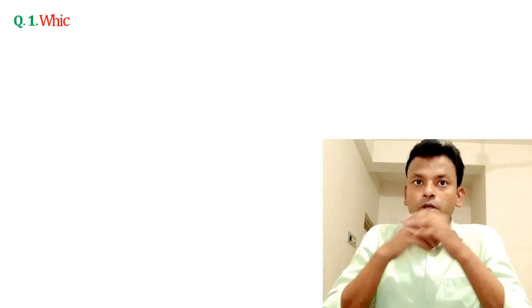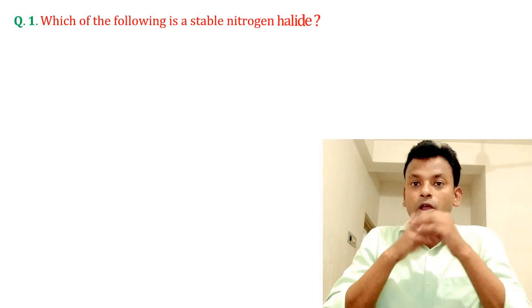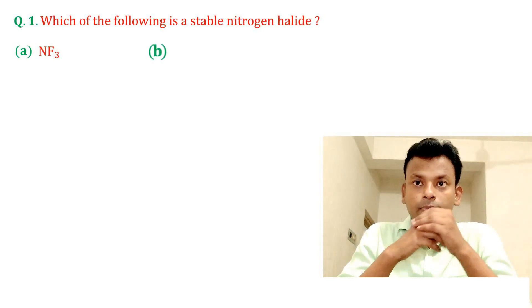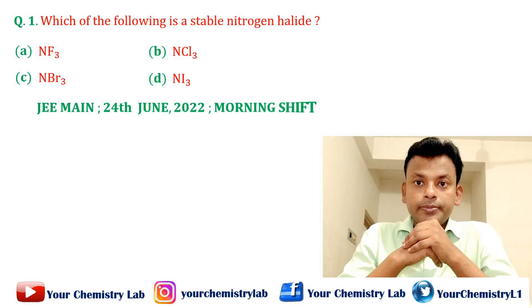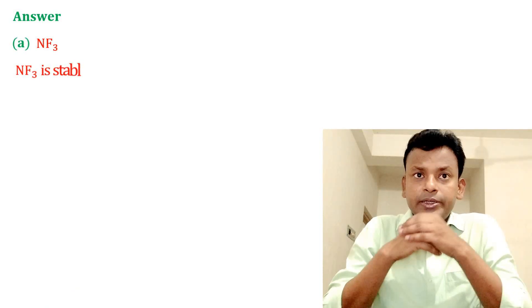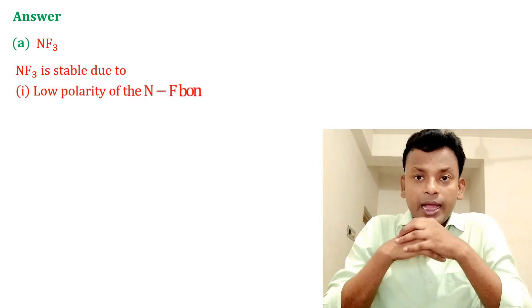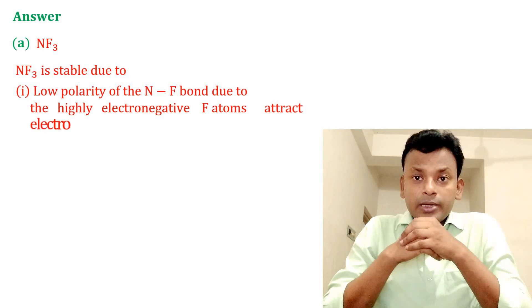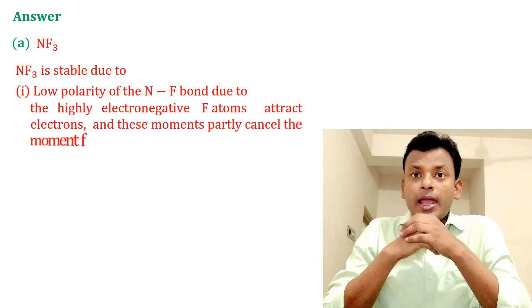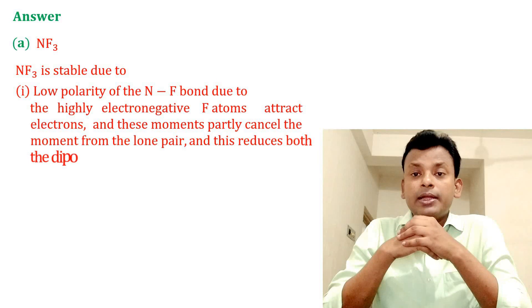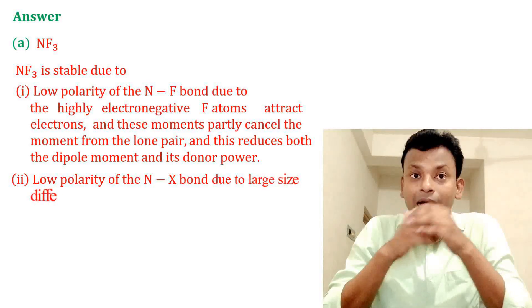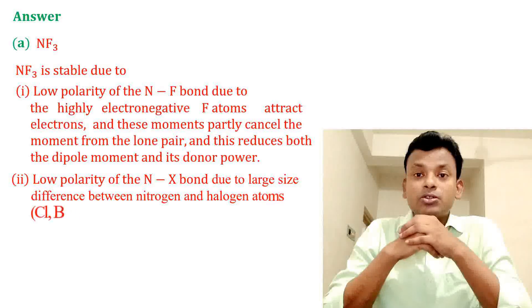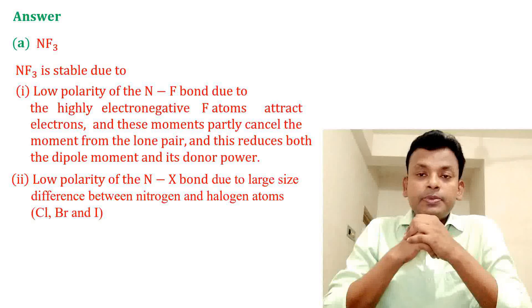Question number one: which of the following is a stable nitrogen halide? Options are given as option A, option B, option C, and option D. Answer: option A is correct, that is NF3. NF3 is stable due to low polarity of the N-F bond caused by the highly electronegative atom, which partly cancels the dipole moment from the lone pair, reducing both the dipole moment and its donor power. Second reason: low polarity of the N-X bond due to large size difference between nitrogen and halogen atoms such as chlorine, bromine, and iodine. So option A, NF3, is the correct answer.